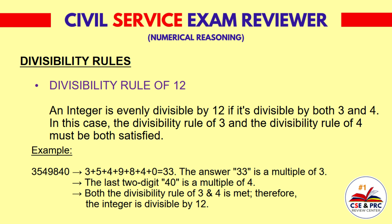Another example, 3,549,840. 3+5+4+9+8+4+0 equals 33, which is a multiple of 3. The last two digits 40 are a multiple of 4. Both the divisibility rule of 3 and 4 are met. Therefore, the integer is divisible by 12.